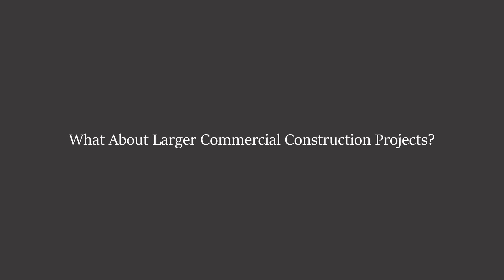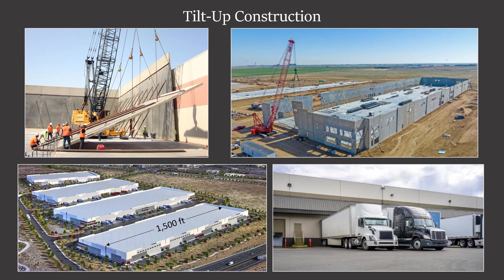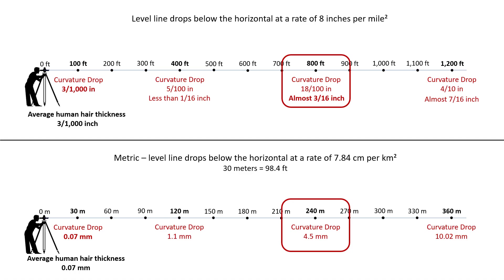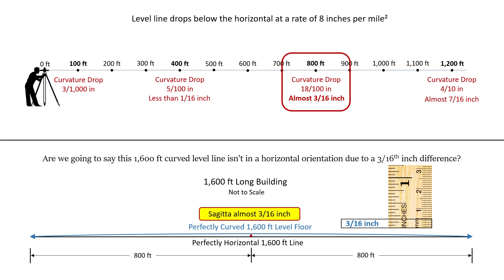What about larger commercial construction projects? I worked in commercial construction, and some of the projects I worked on used a technique called tilt-up construction. These were industrial parks that usually included three or more buildings, and some of the warehouses were up to 1,500 feet in length. So let's take a look at the curvature drop for 800 feet, which is almost 3/16 of an inch. This means that if we had a 1,600-foot long building with a perfectly curved level floor, the center of that floor would only be 3/16 of an inch higher than each end when compared to a horizontal line.